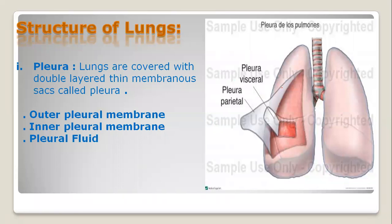Regarding the structure of the lungs: the lungs are covered with a double-layered thin membranous sac called the pleura. There are two layers of pleura — the outer pleural membrane and the inner pleural membrane. Between these two layers there is also pleural fluid, similar to the pericardium fluid we studied in grade nine, which provides frictionless movement when the lungs contract or expand while taking in or releasing air.